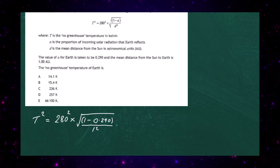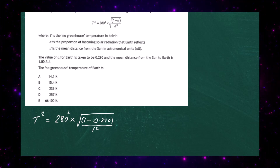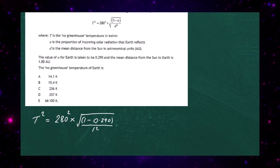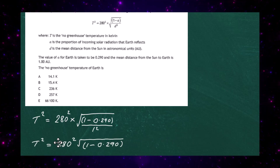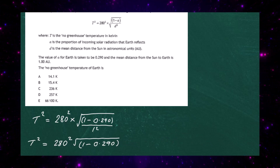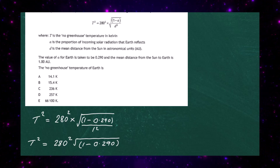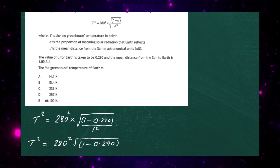That gives us T² = 280² × √(1 − 0.290) / 1². Since 1² = 1, that becomes T² = 280² × √(1 − 0.290). Now we use our calculator to work this out.